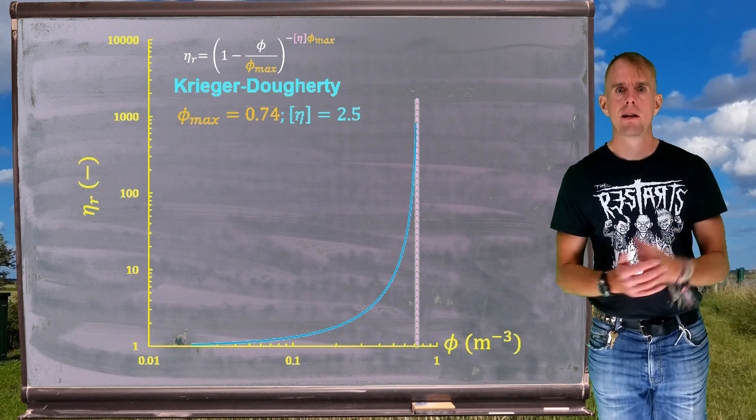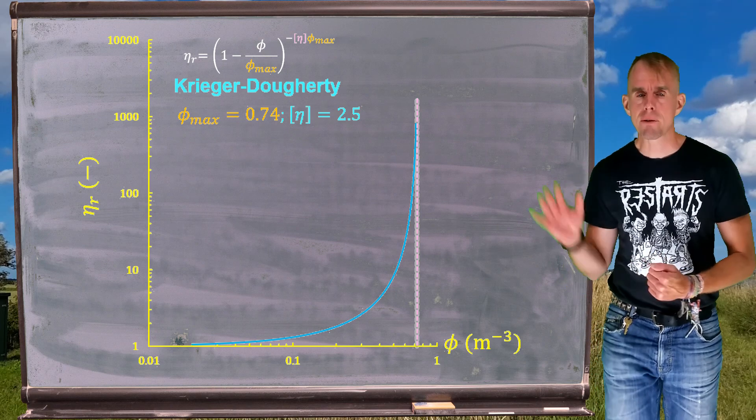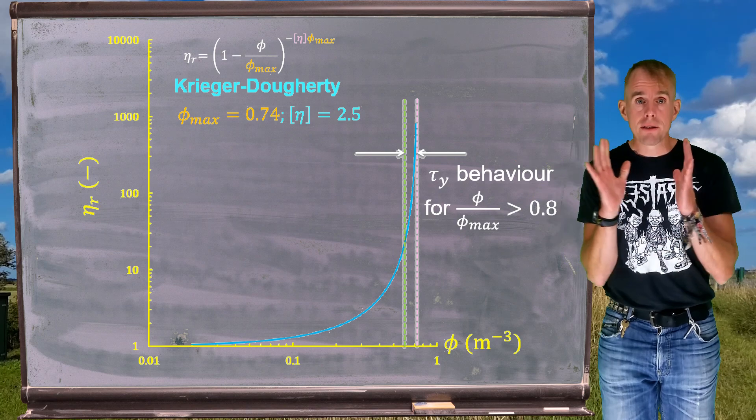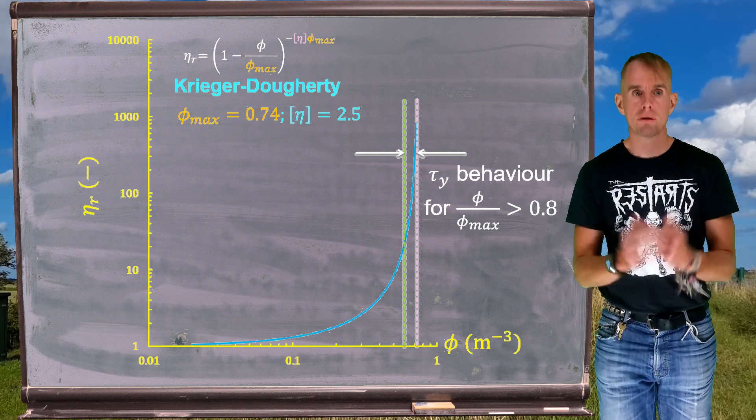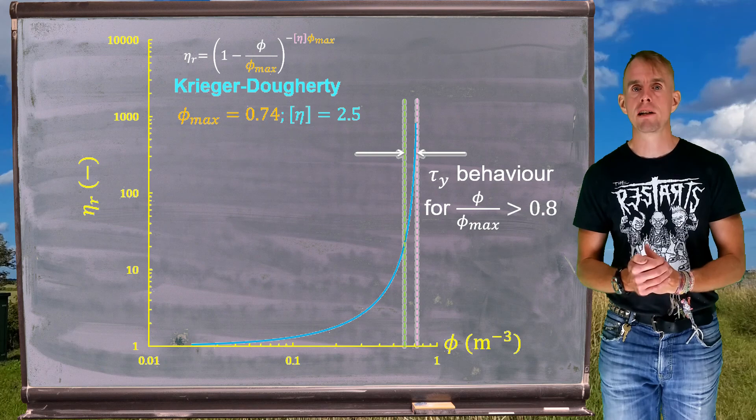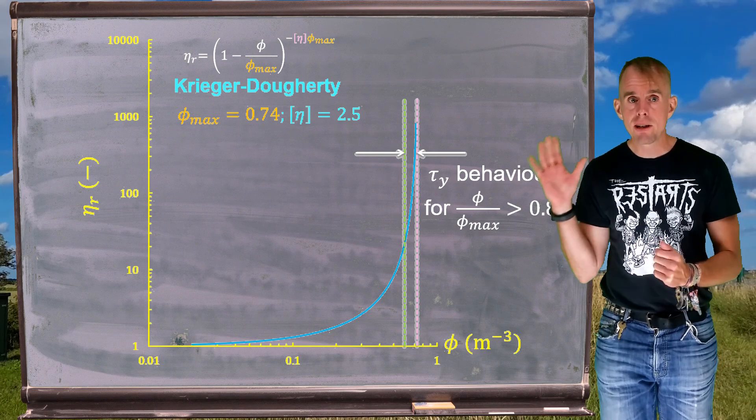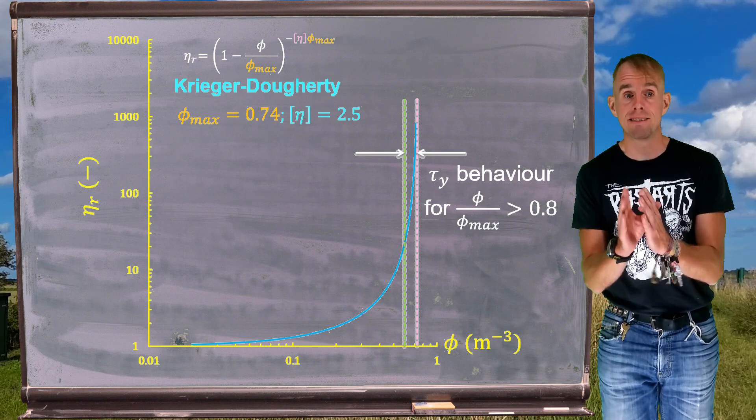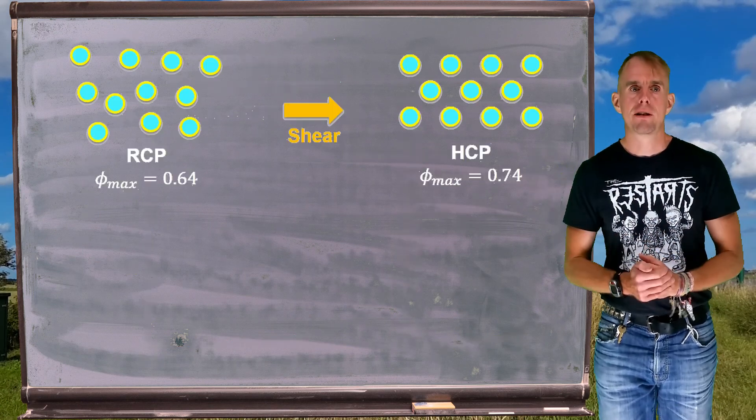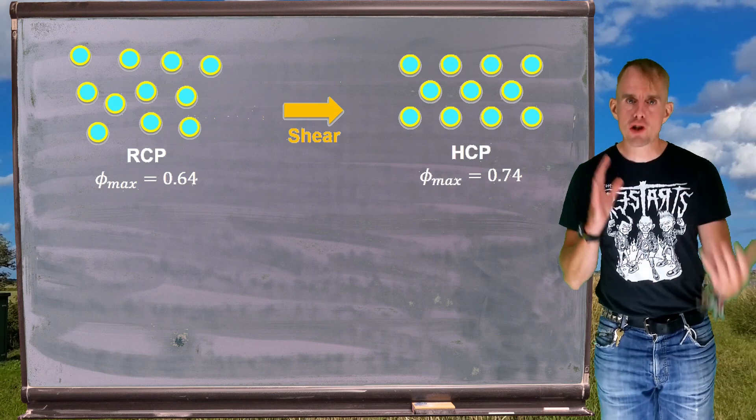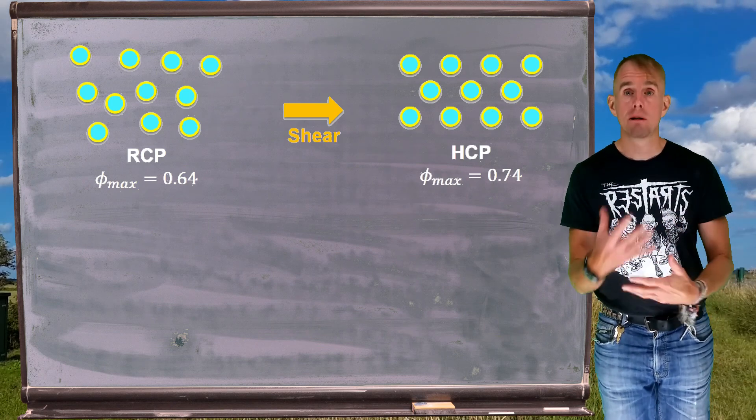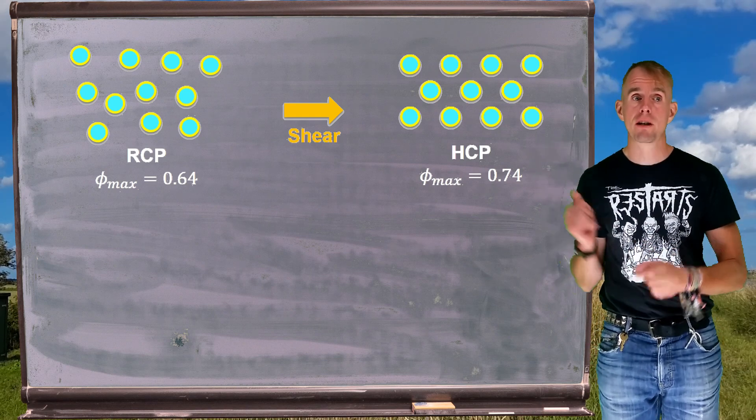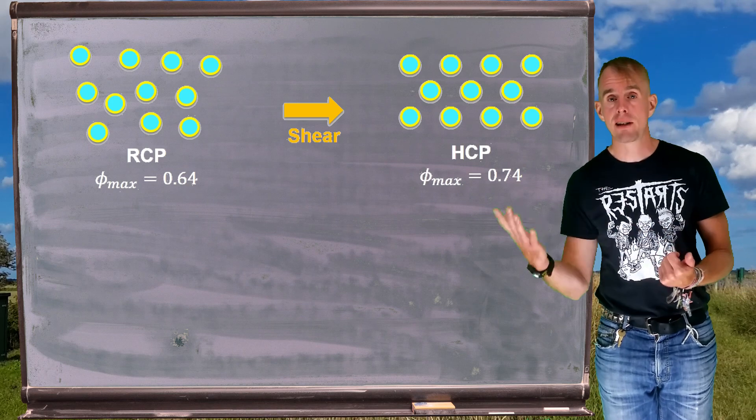Remember how we can get that from the Brownian hard spheres result. Now the region of interest for yield stress is now highlighted, so the gap between those two horizontal lines is where φ over φ_max is greater than 0.8, and we can see that this captures that asymptotic behavior to relative viscosity going to infinity. So let's remind ourselves of a mechanism. We said that shear can order particles. No matter what diameter those particles are, there will be an ordering effect, and we can go from say random close packing to hexagonal close packing.